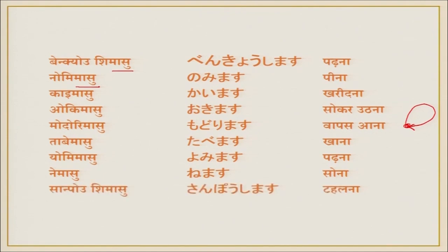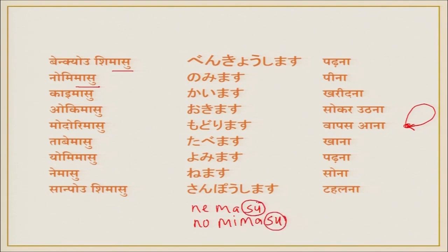Tabemasu, yomimasu, nemasu, sanpo shimasu — meaning to take a walk. Now notice the ending: 'su' is written but pronounced as a short, devoiced sound. So don't say 'nemasu' fully — make 'su' a little shorter: 'nemas.' It is written as 'su' but pronounced quickly. Keep this in mind — it will make speaking easier.